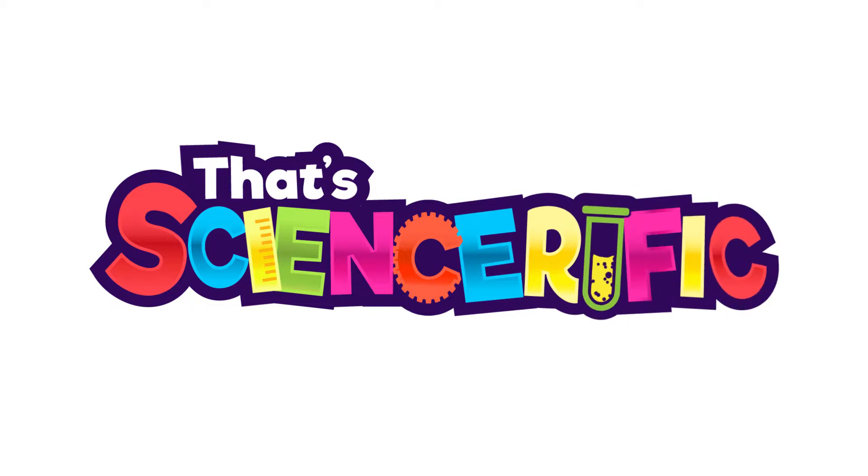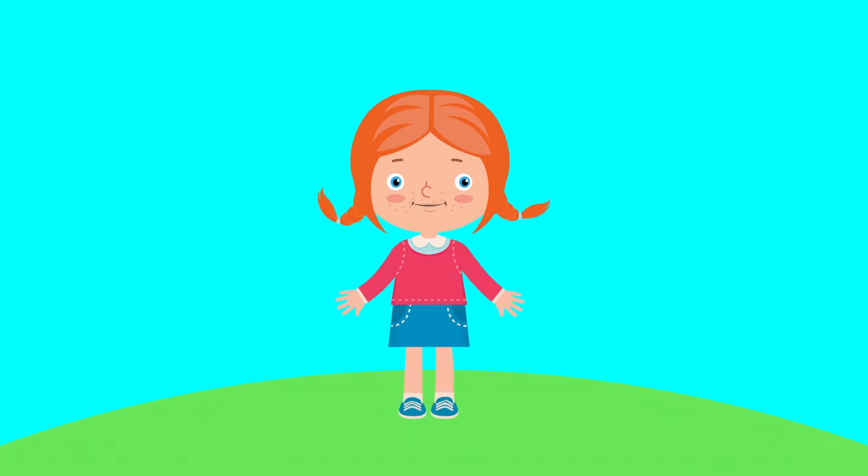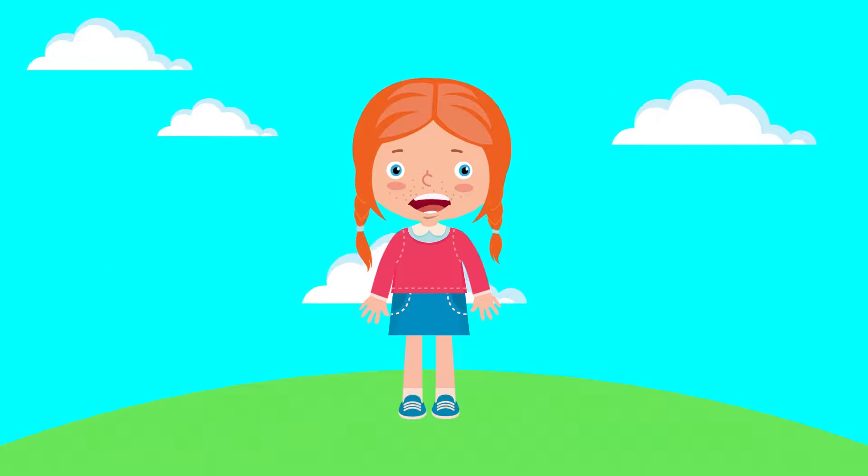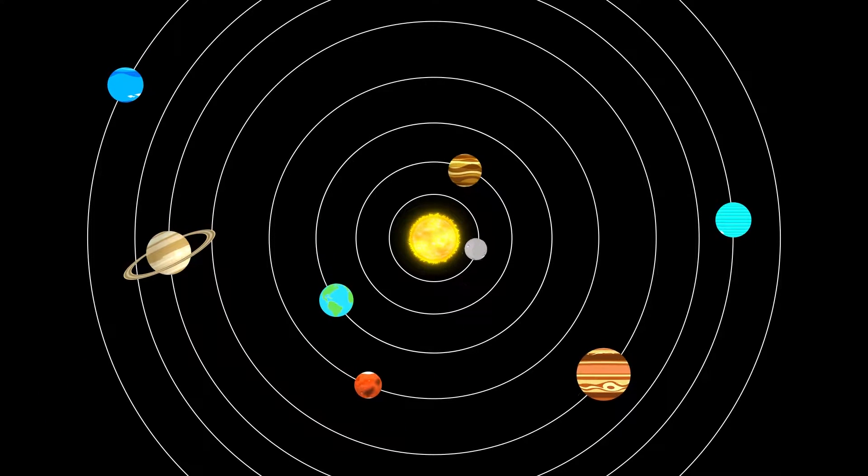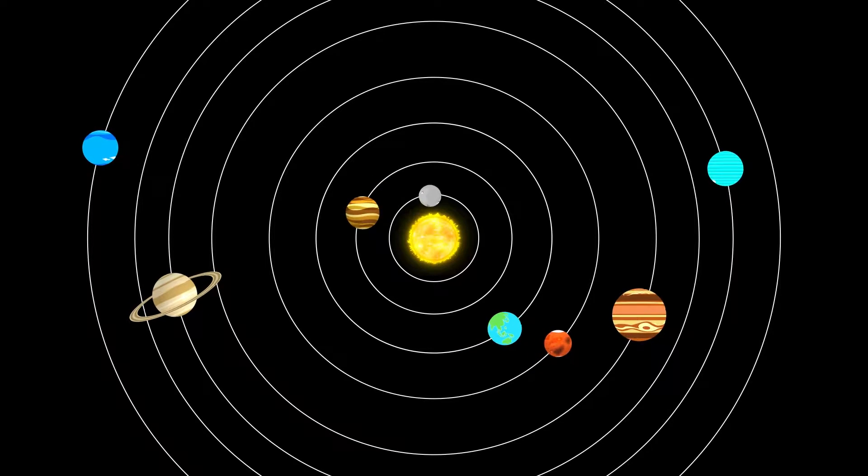That's science-rific! Let's learn about our solar system. The solar system is made of eight planets that orbit around the sun.